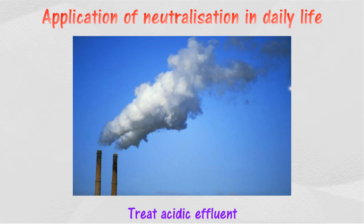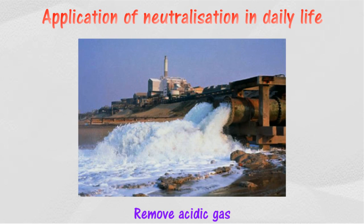Effluent from factories is acidic. This effluent is treated with lime, which will neutralize the acid in the effluent before being discharged. Power stations and industries produce acidic gases such as sulfur dioxide. Calcium carbonate is used as a base to remove this acidic gas.